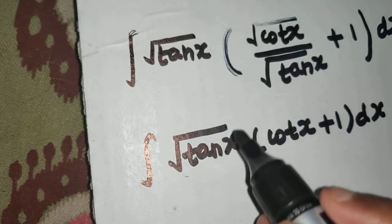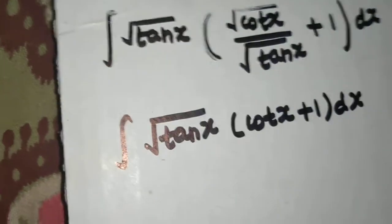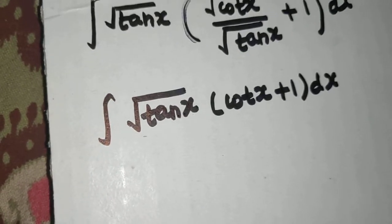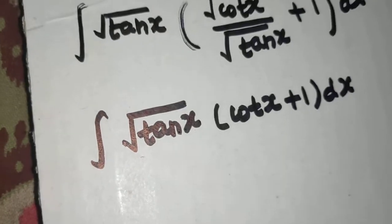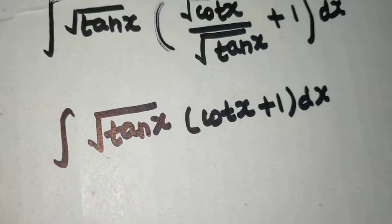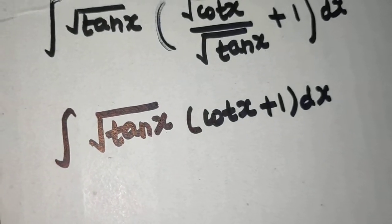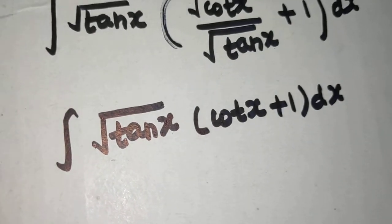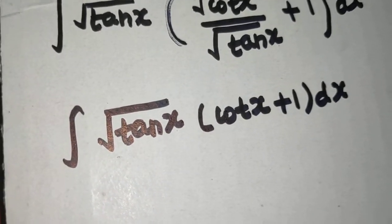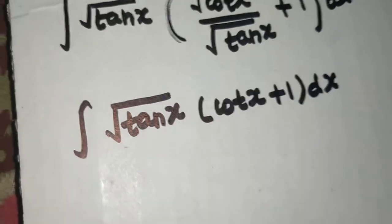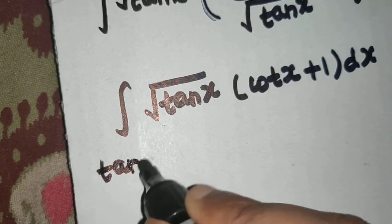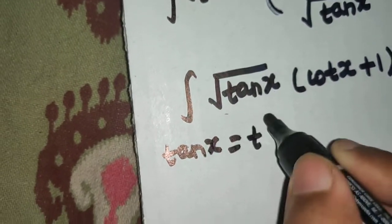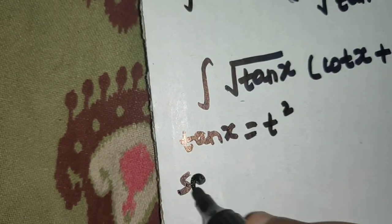Now, because the root is in tan x, we'll have to take a substitution in tan x — that will be better. It is well known that if a term is inside a root, it is better to take that as t². So if I take tan x = t², I know the derivative of tan x is sec²x.